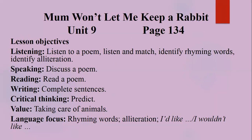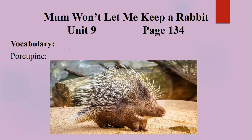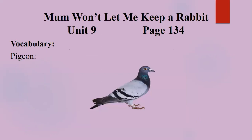I also discussed some vocabulary words. All vocabulary words are related to the names of animals. I brought pictures of those animals — birds, reptiles, amphibians, and fish — so students can understand what they look like. The first animal is a porcupine, the second is a water rat, then pigeon and snail.